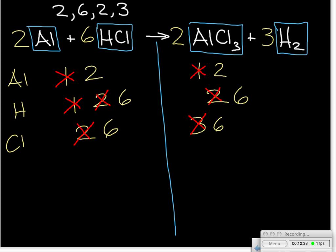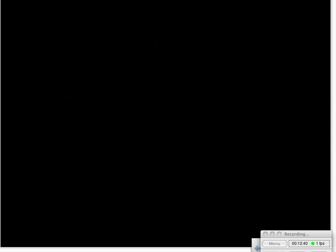I'm going to do one more example. In my video on the background and the process, we talked about situations where you have everything balanced except for one element that's in its elemental form. If you can get everything balanced except that one element and use a fraction temporarily, you can then multiply all your coefficients at the end to get them to a nice whole number ratio.